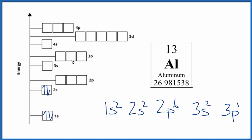2s² - two electrons in opposite directions. Then 2p⁶: 2, 3, 4, 5, 6. Then 3s². And then we only have one electron in 3p¹.